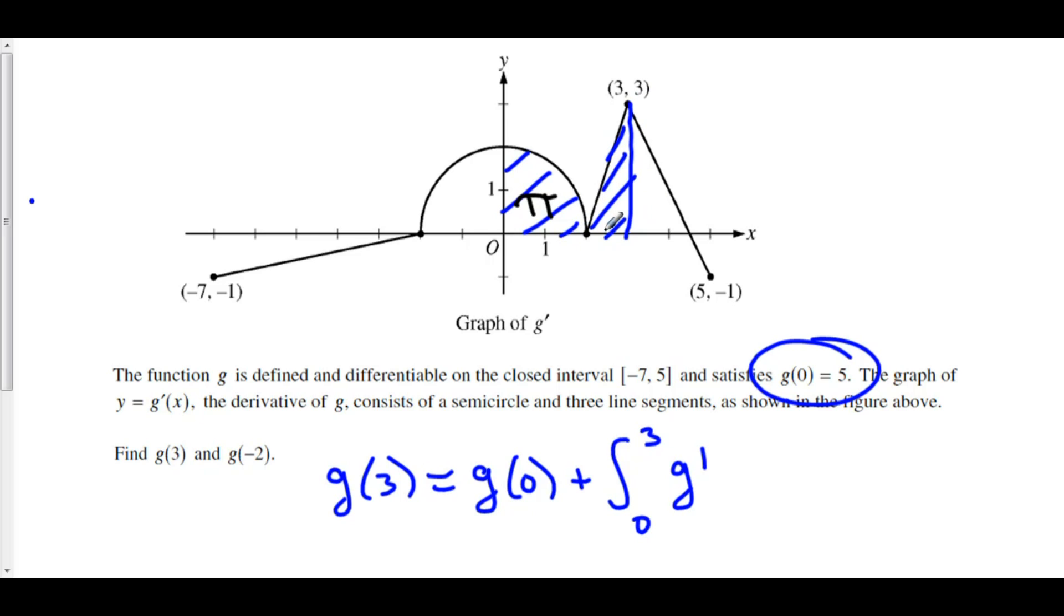And now we have this triangle right here with base 1 and height 3. And the area of a triangle is 1 half base times height, and 1 half 1 times 3 gives us 3 halves.